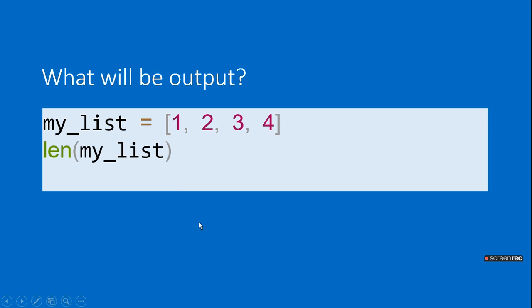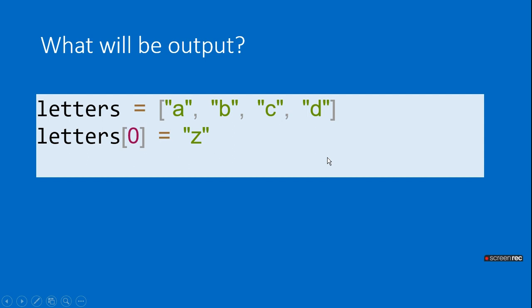You have to find out the length of the list. It will give you 4 because there are 4 elements in the list. So what will be the output of letter = ['A', 'B', 'C', 'D']?